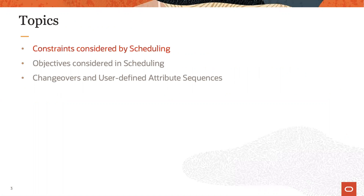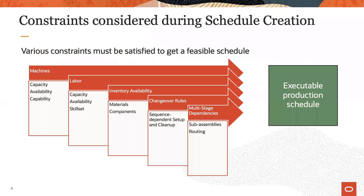Let's start with the constraints. Obvious constraints are around machine and labor capacity, their availability or non-availability, and their capability or skill sets. Not every manufacturing task can be performed on every machine, and similar applies to labor pools with their specific skill sets.